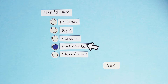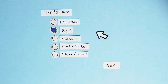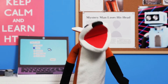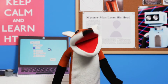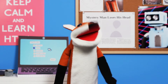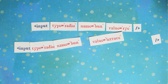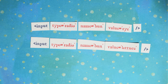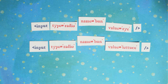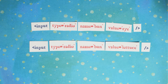Radio inputs are useful when you only want to allow one item to be selected from a list of options. To group radio buttons together, they are all given the same name. In this case, the name is 'bun'. The value attribute contains the data that will be sent to the website when I submit the form.